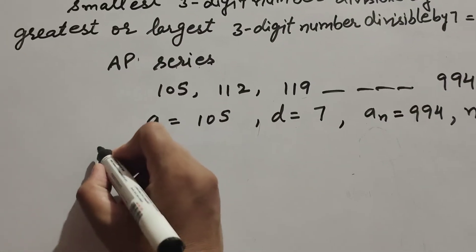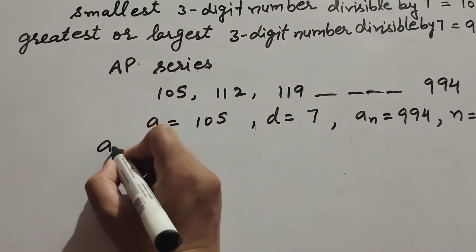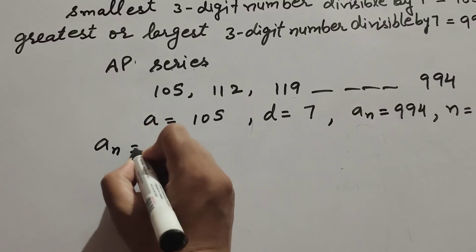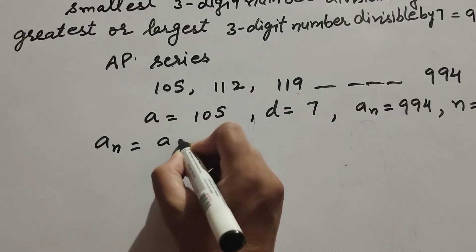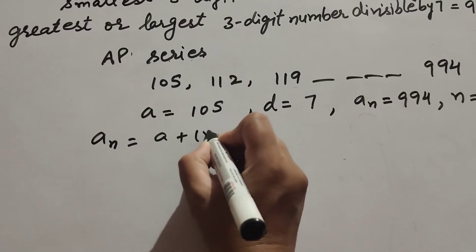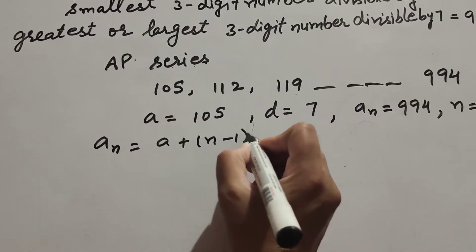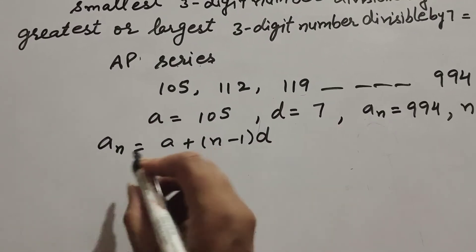We use the formula to find the nth term of the AP: aₙ = a + (n − 1) × d.